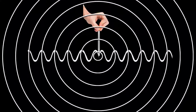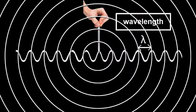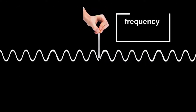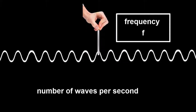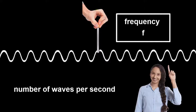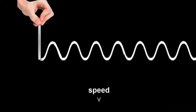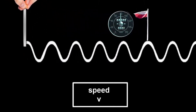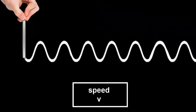In the previous video we described waves using their wavelength lambda, which is the distance between crests. Their frequency f is how many waves the source makes per second, and is the same as the number of waves that pass by a point each second. The speed v is how fast each wave crest moves — also the distance each crest moves per second.